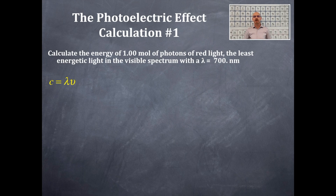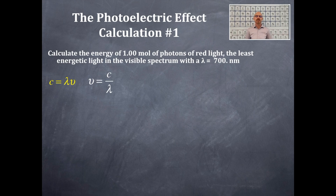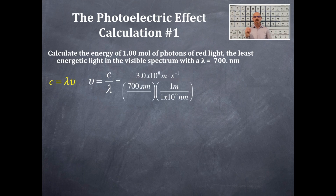We're going to start with the equation c = λν, where c is the speed of light, lambda is the wavelength, and nu is the frequency. We have the speed of light — that's 3×10⁸ meters per second — and we also have the wavelength, so we can calculate the frequency. We rearrange to solve for frequency and plug in those values.